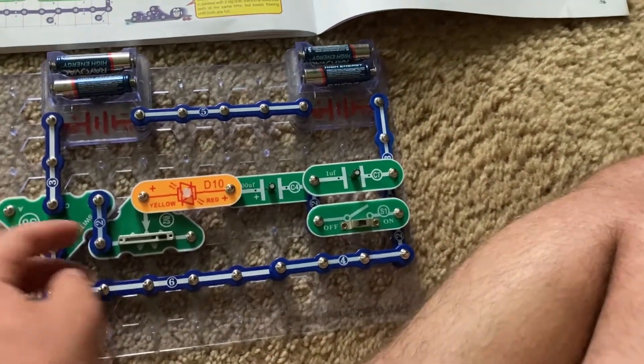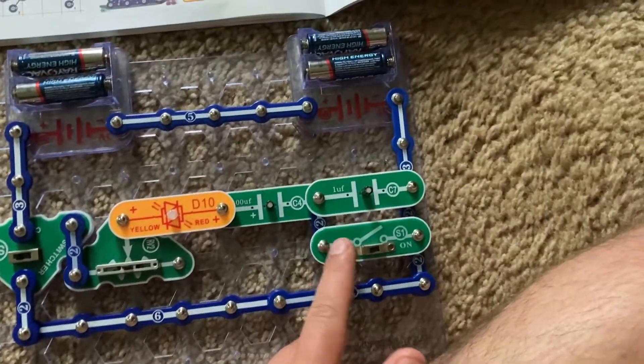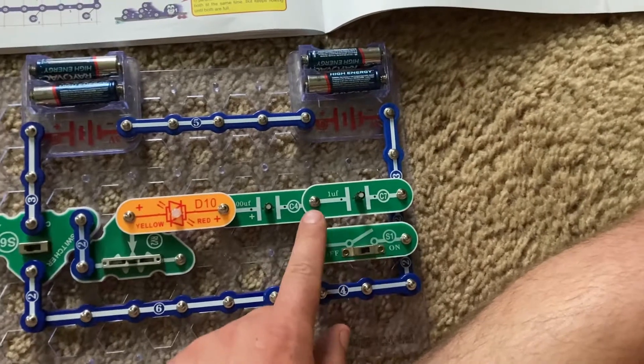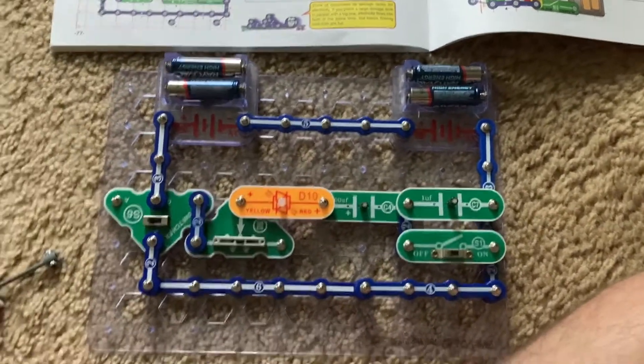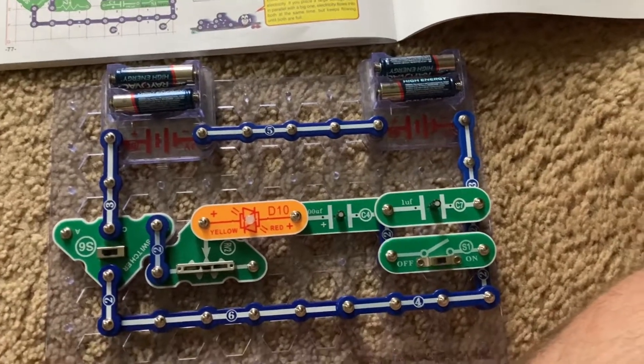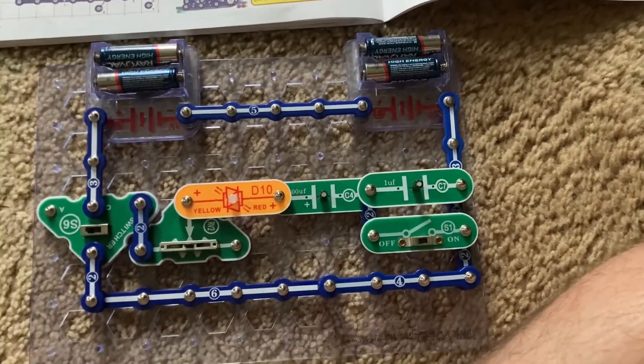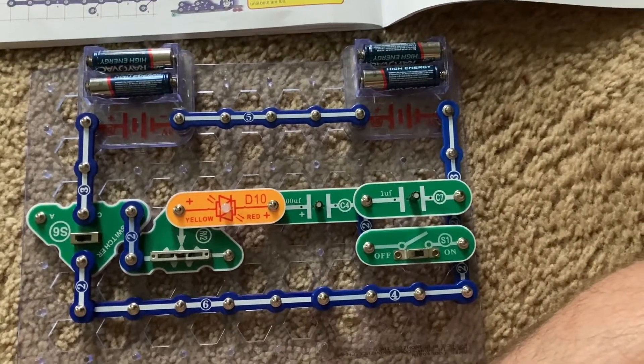Moving the lever on the adjustable resistor won't make much of a difference when the C7 capacitor is connected too. So hopefully it will be easy for you to understand how the capacitors are working in this project when they're in series.